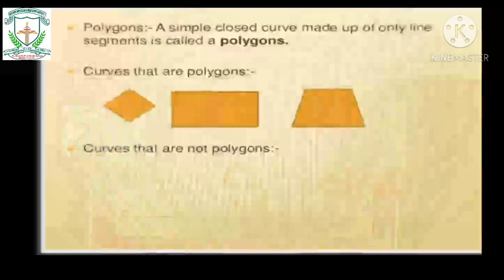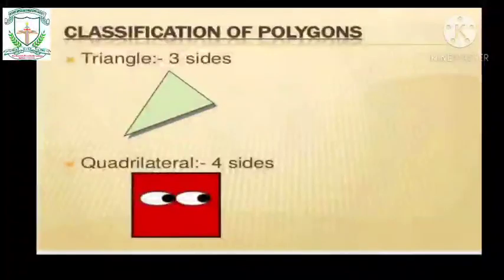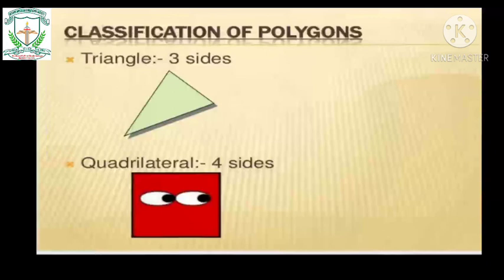Now let us look at the types of polygons depending on the number of sides — the classification of polygons. First is the triangle: a polygon with three sides is called a triangle.